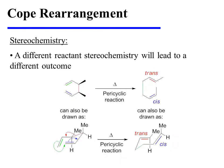A different reactant stereochemistry will, of course, lead to a different outcome. In this example, the reactant is a meso compound, and it is a stereoisomer of the reactant used on the previous slide. When we draw this meso compound in a chair-like conformation, we see that one of the methyl groups can be placed in a pseudo-equatorial position, but the other must be placed in a pseudo-axial position. After cope rearrangement, one of the product alkenes has the trans configuration, but the other one has the cis configuration. Note the difference from the preceding example, in which both product alkenes had the trans configuration.